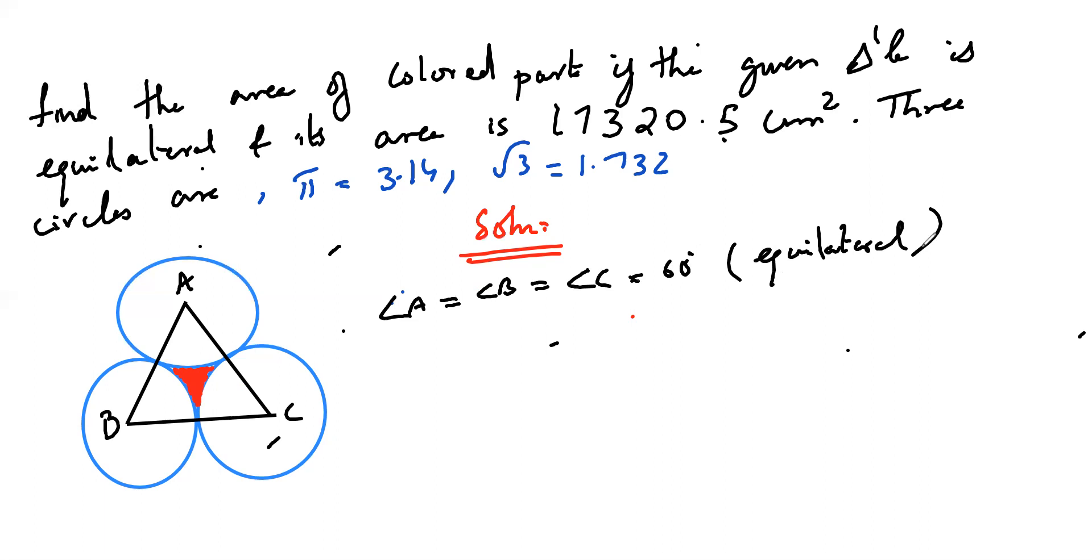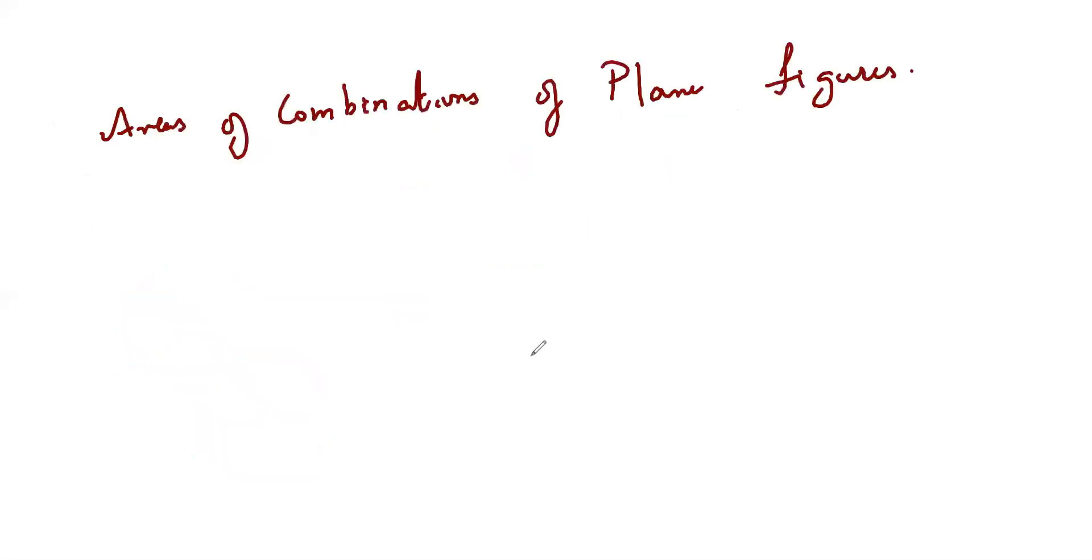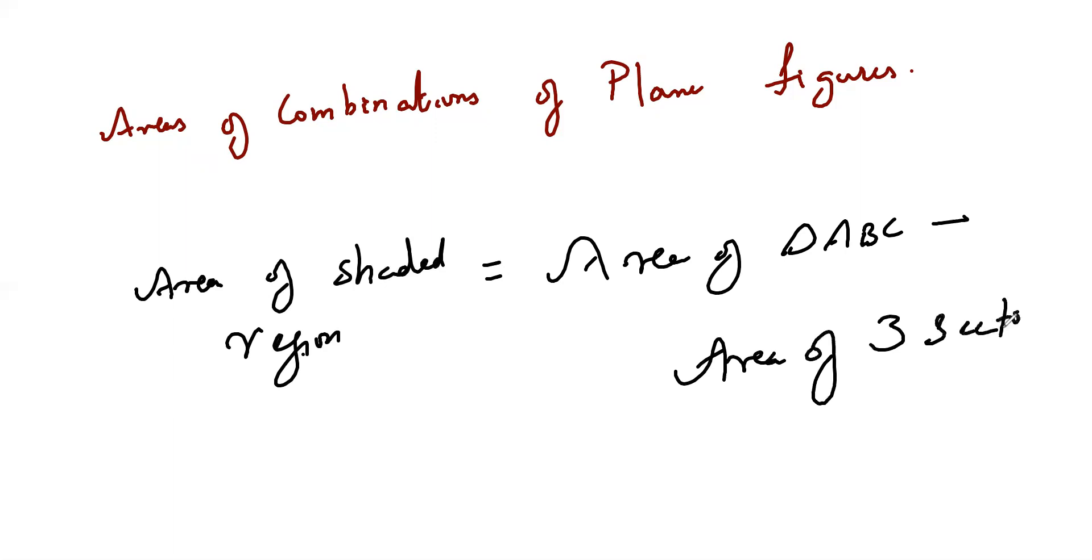Now, if I want to find the area of shaded region, area of triangle ABC. This is for the area of combination of plane figures. So in area of combination of plane figures, suppose this question is given, there is always a formula. Area of the shaded region is equal to area of triangle ABC minus area of three sectors. This is a common formula we use for almost all the problems here. So the same formula I'm going to apply here.